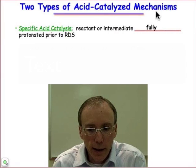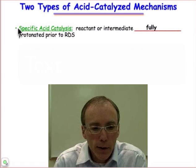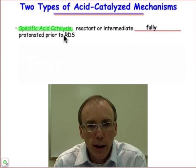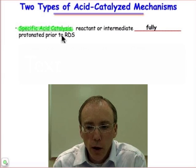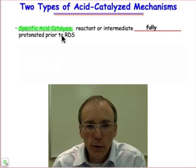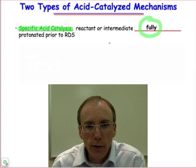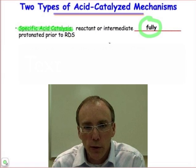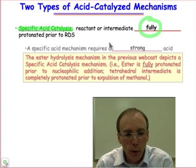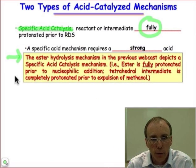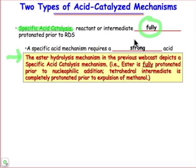Here we're going to be looking at acid-catalyzed reactions and we're going to be making a distinction between what we call specific acid-catalyzed reactions — what you're used to thinking about — where protons are fully transferred to reactants or intermediates, and this takes place prior to the rate-determining step. This is what we learned about when we talked about ester hydrolysis. In order to accomplish specific acid-catalyzed reaction mechanisms, we require a strong acid in order to fully transfer that proton.